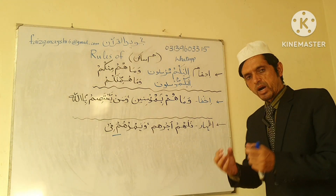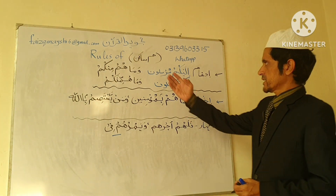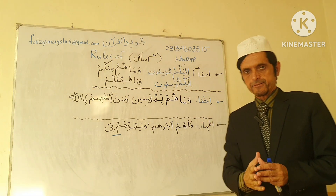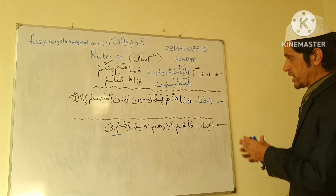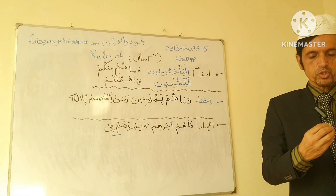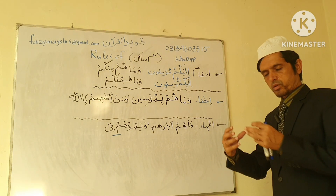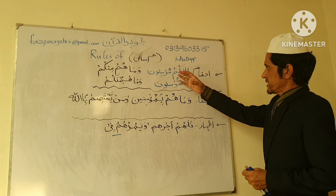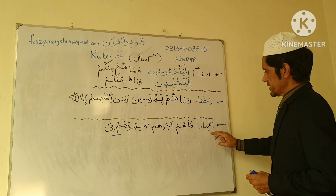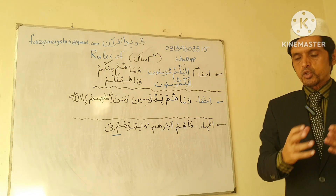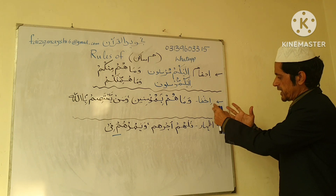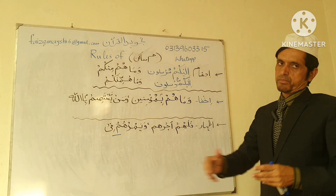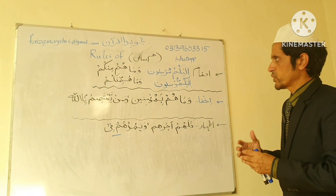Today I will teach you a few rules related to Meem Saakin — Qaida rules related to Meem Saakin. We have three important rules. Whenever we read the Holy Quran and encounter Meem Saakin, we follow these rules. Number one: Idgham. Number two: Ikhfa. Number three: Izhar.